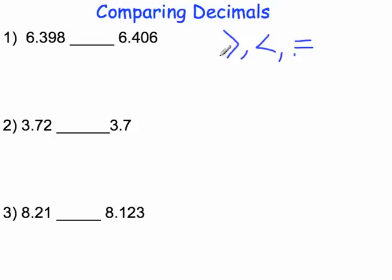In our first example, we are going to compare 6 and 398 thousandths to 6 and 406 thousandths. I am going to start all the way at the place value to the left, which in this case is the ones column, and I am going to start comparing there, moving to the right.